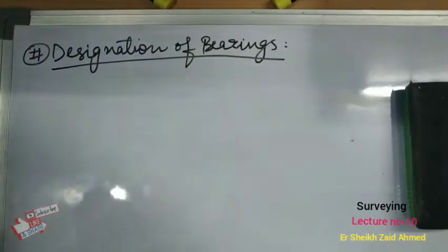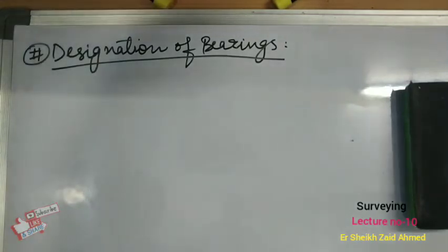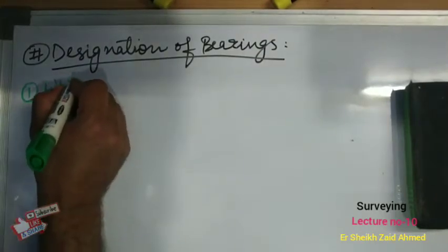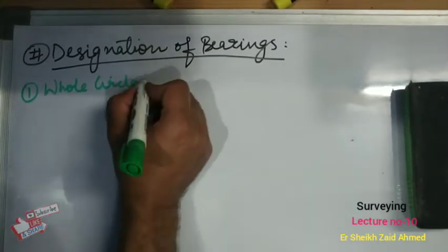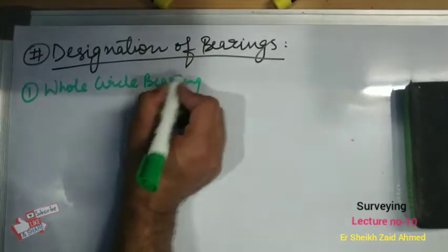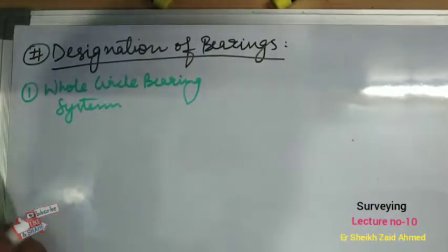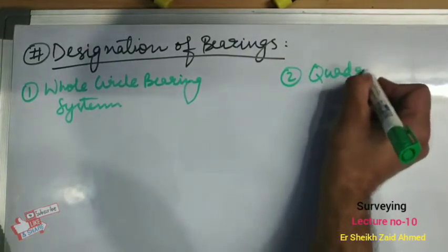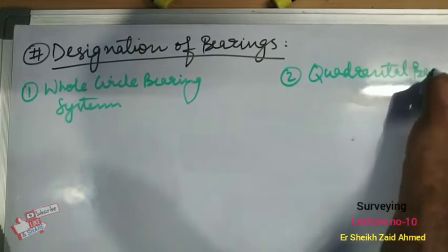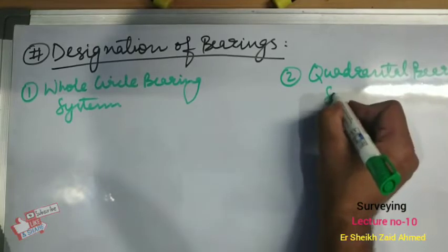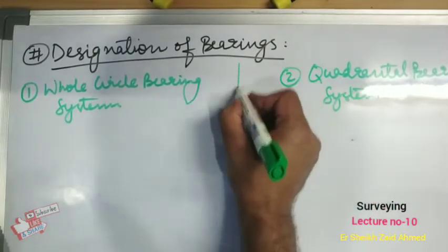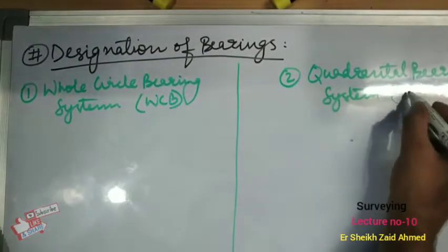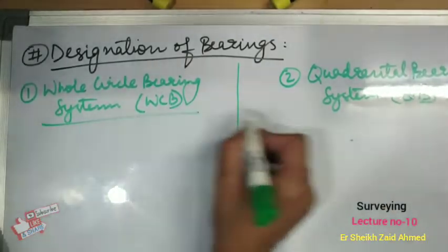The bearing of a line can be designated in the following two systems. The first one is the Whole Circle Bearing system, abbreviated as WCB, and the second one is the Quadrantal Bearing system, abbreviated as QB. We will be discussing both these systems one by one.